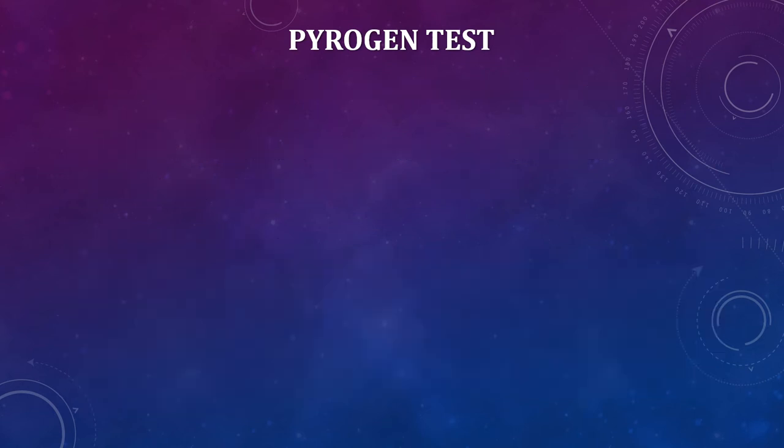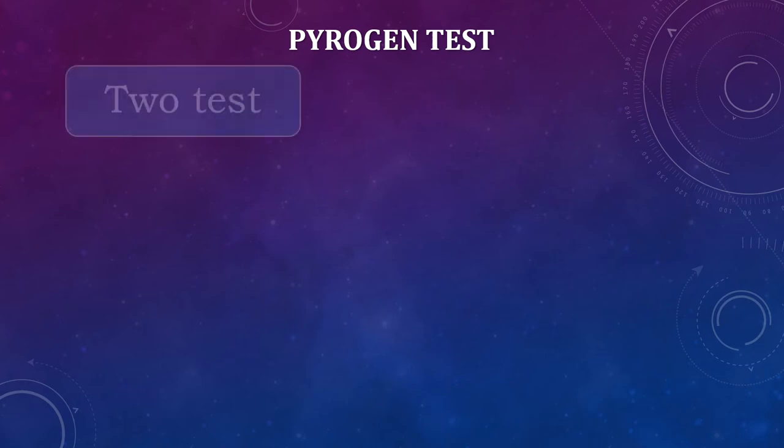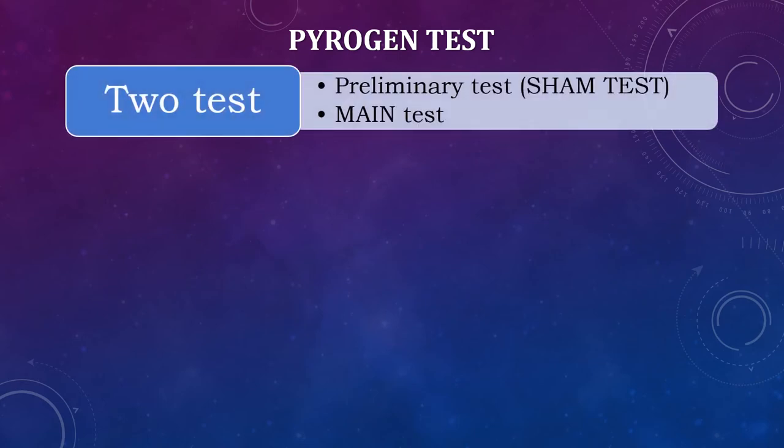The first test is the pyrogen test. In this test, we have to perform two tests: one is the preliminary test, i.e., the sham test, and the other is the main test.